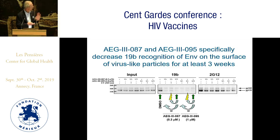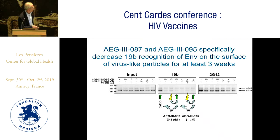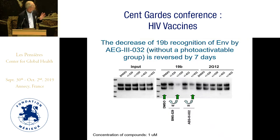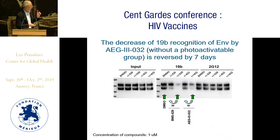Now I'll show the same experiment done with the new AEG photoactivatable analogs. The 2G12 controls show little effect as expected. With these compounds compared to DMSO, 19B recognition is dramatically reduced initially and remains reduced even after three weeks of washing. Importantly, UV irradiation is not actually required to see these long-acting effects — they depend upon the photoactivatable groups but are not dependent on UV irradiation.